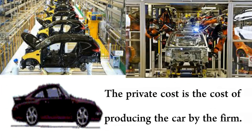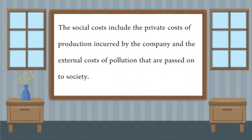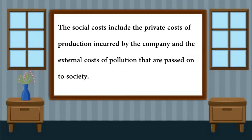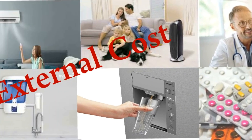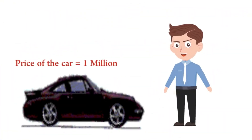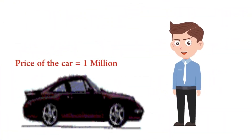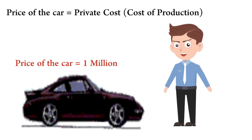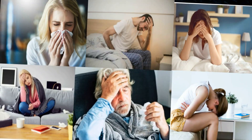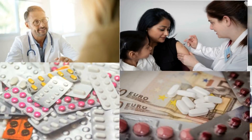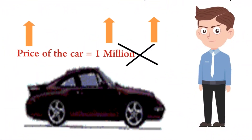The private cost is the cost of producing the car by the firm. The social costs include the private costs of production incurred by the company and the external costs of pollution that are passed on to society. The car manufacturing firm sells the car to Mr. John, who purchases the car at a price equal to the private costs of producing the car. The car manufacturing firm does not take into account the external costs borne by the people. If the firm were to take these costs into consideration, it would increase the price of the car and give a portion of it to the people staying near the plant as compensation.